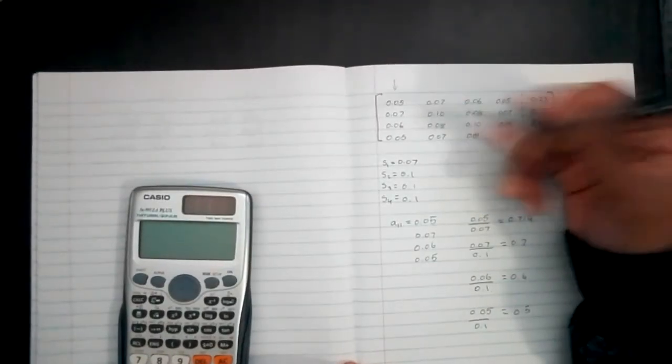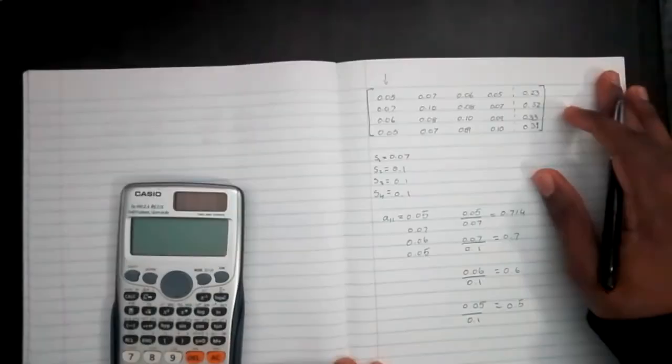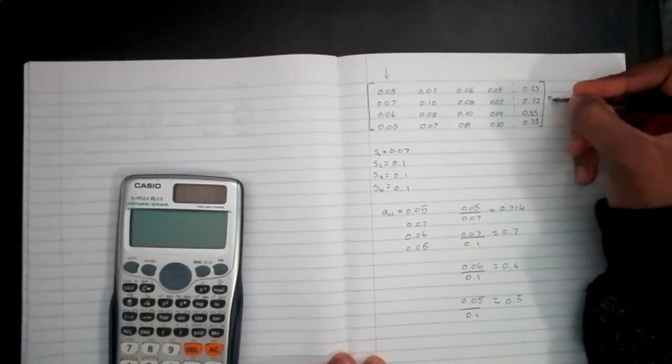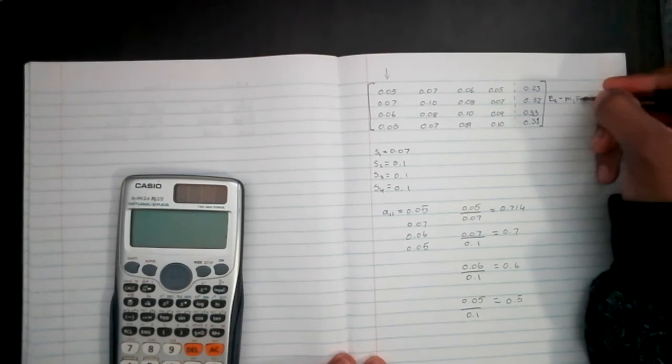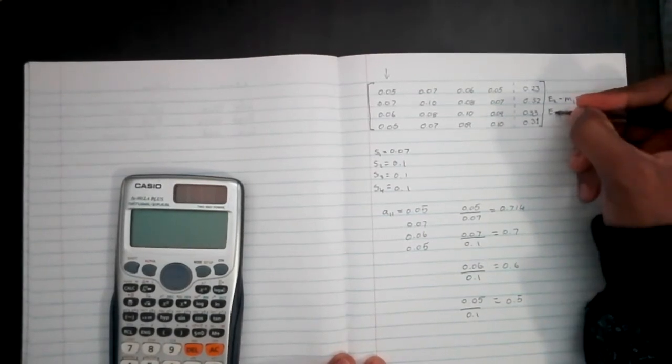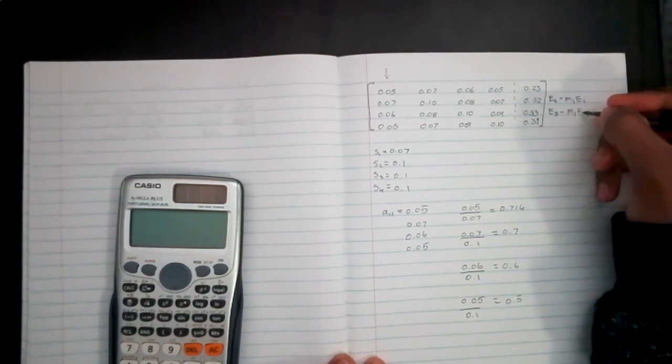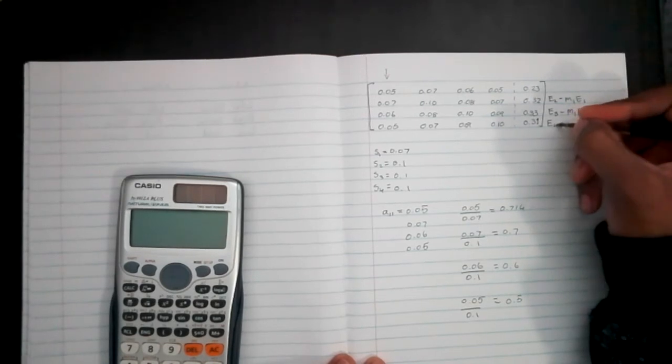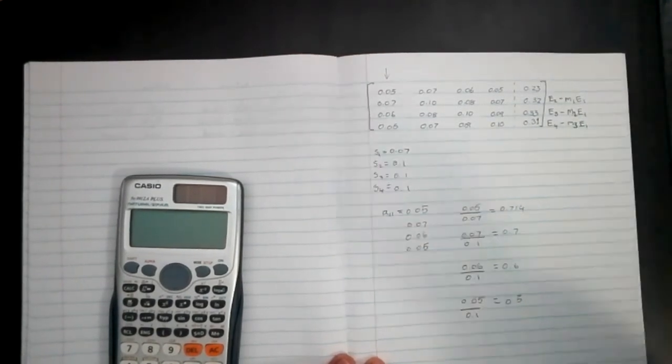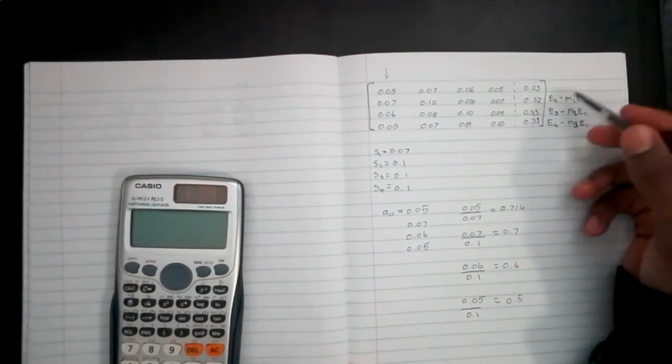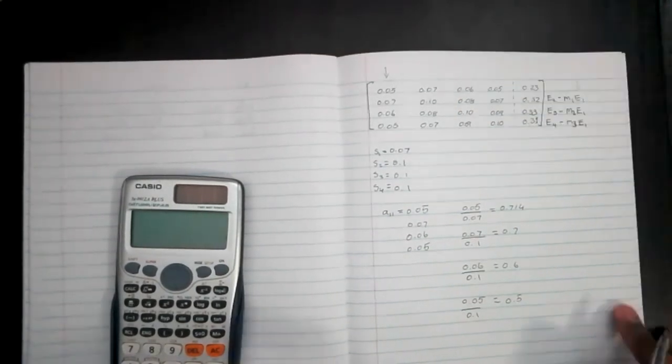From this stage, we can now eliminate the other rows using the first row. The transformations we want to make here is E2 minus M1*E1, E3 minus M2*E1, and E4 minus M3*E1. So we know what E2, E3, E4 are - they are just these equations. We need to figure out what the multipliers are going to be. Let's do that.